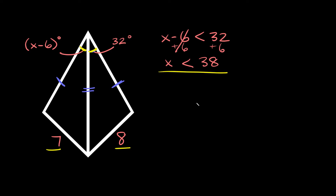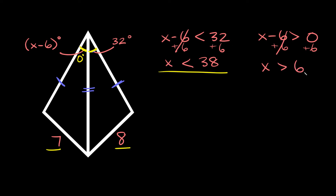We found one solution, but remember we're looking for a range, so we need to find one more solution. To find it, we take our unknown angle x minus 6 and say it's greater than 0. That makes sense because if this angle were 0 degrees we wouldn't actually have an angle. So whatever this angle is, it has to be bigger than 0 — that's how we find the lower limit. Adding 6 to both sides, we get that x is greater than 6.